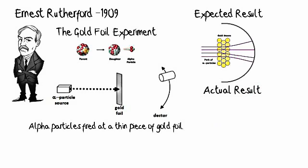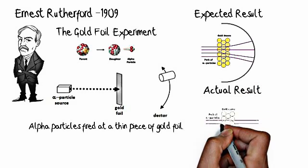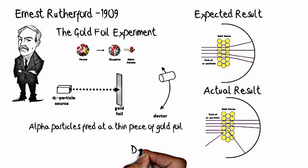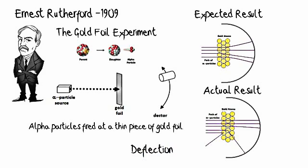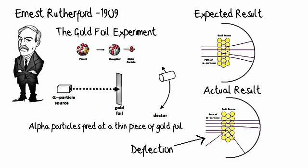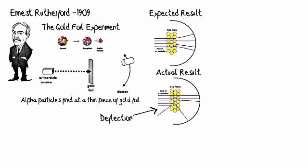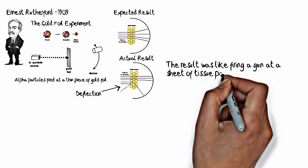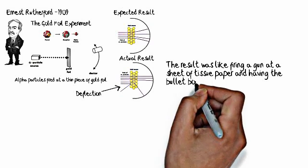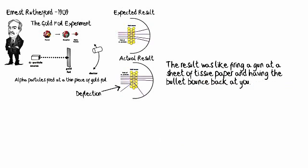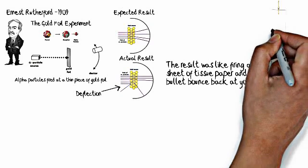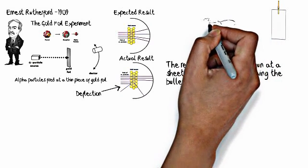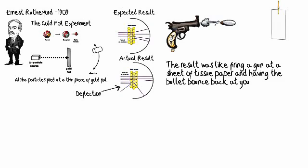Now what he actually got was a deflection. Most particles went straight through, but some particles actually hit something and bounced back. And Rutherford said that the result was like firing a gun at a sheet of tissue paper and having the bullet bounce back at you. So think about that. If you take a gun and you shot it at a piece of tissue paper and the bullet came back at you, you'd be pretty surprised. And that's how Rutherford felt.